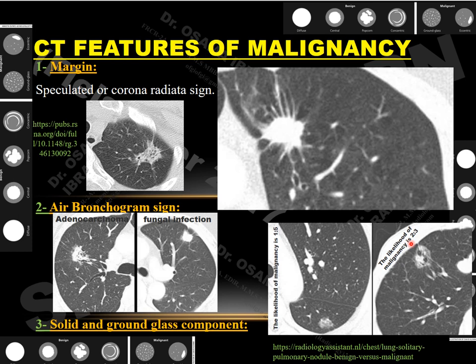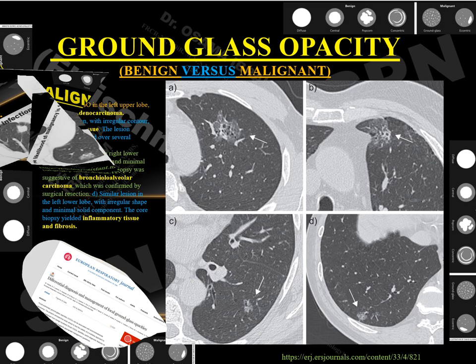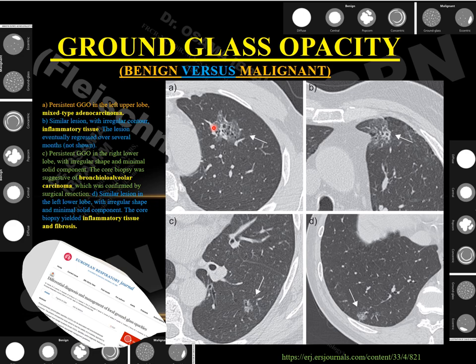Comparing benign versus malignant ground glass nodules: four different patients with solitary ground glass pulmonary nodules were shown. Biopsy confirmed invasive adenocarcinoma, mixed type adenocarcinoma, and broncho-alveolar cell carcinoma in three cases. However, the sub-pleural nodule with irregular margins was confirmed by biopsy as inflammatory tissue and fibrosis — benign. Ground glass pulmonary nodules carry a high risk of malignancy, and imaging alone cannot always discriminate, so careful attention is warranted.